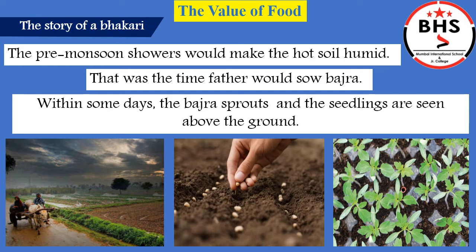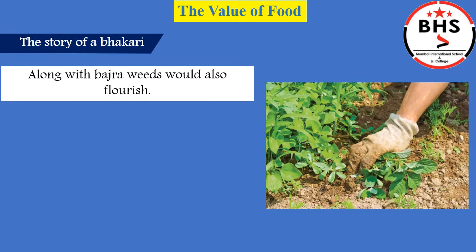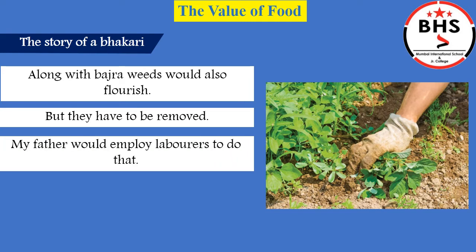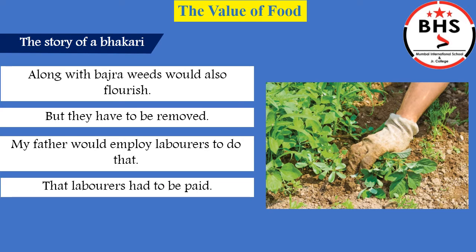The seedlings — meaning small tiny plants — are seen above the ground. Along with bajra, weeds, meaning other unwanted plants, would also grow. But weeds have to be removed. So the mother's father would employ laborers to remove the weeds. These workers had to be paid money for removing the weeds.